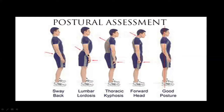In lumbar lordosis, the rectus femoris, iliopsoas, and quadriceps muscles are going to become tight in the front. The hip extensors — gluteus maximus and hamstrings — are going to become weak at the back. In physiotherapy, this is known as lower cross syndrome. The lumbar extensors, such as erector spinae, multifidus, and rotator muscles of the lumbar spine, are going to become very tight in the lumbar region.